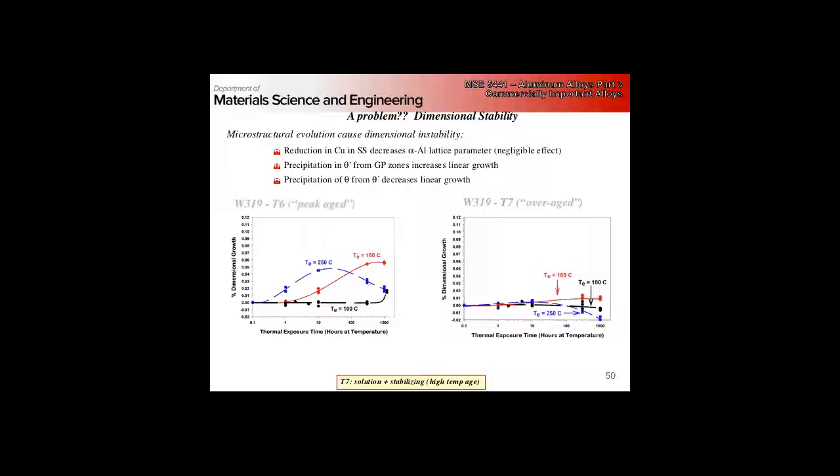If we hold this at 100C, not much happens for a long time. At 180, as we hold it over time, it grows. At 250, it grows and then shrinks again. So what the heck is going on here? As GP zones grow, we reduce copper from the solid solution. That gives us a small change in the lattice parameter, sort of a negligible effect. But as we precipitate theta prime, remember all these intermediate phases are much more complicated structures. They're not close packed, they're more open structures. So we get a growth.